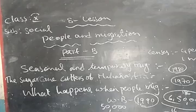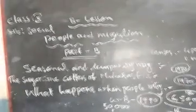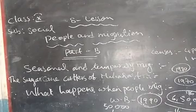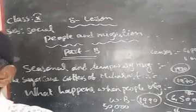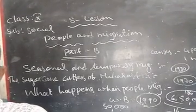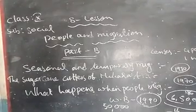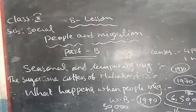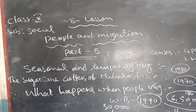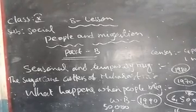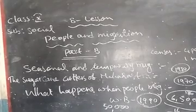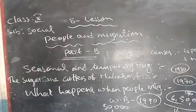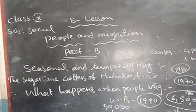Looking at the background of short-term migrants in India in 2007: 19% are SC (Scheduled Caste) people, 23% are ST (Scheduled Tribe), 40% are OBC (Other Backward Communities), and the remaining percentage are others — meaning people apart from SC, ST, and OBC categories.